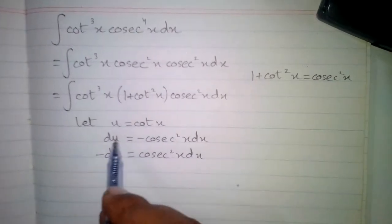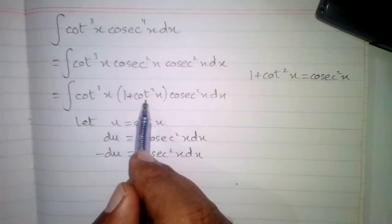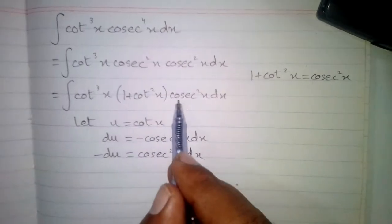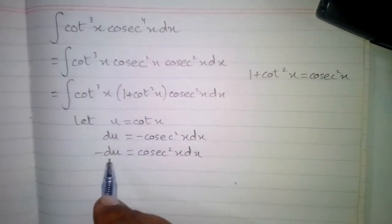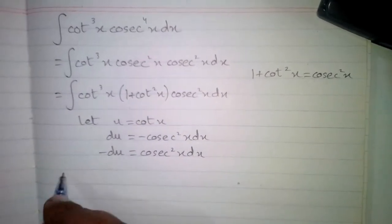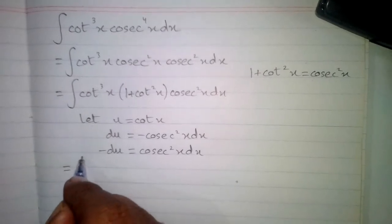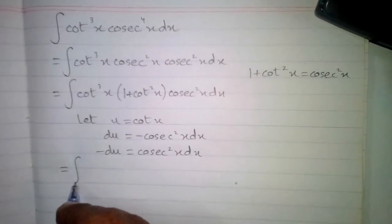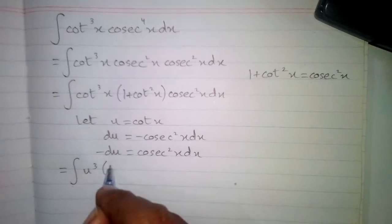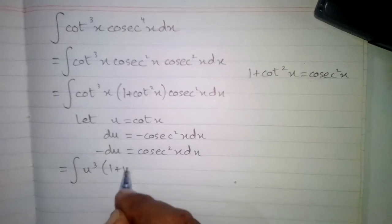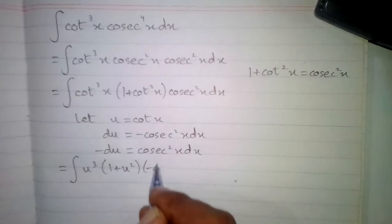We will put u in place of cot x, and in place of cos square x dx we will put minus du. So we can write the integral of u cube times 1 plus u square times minus du.